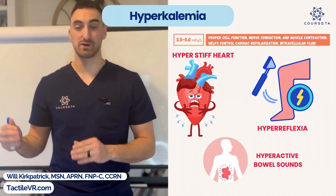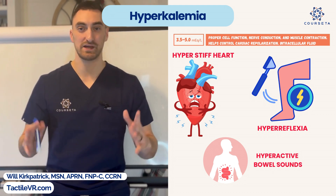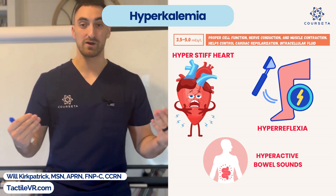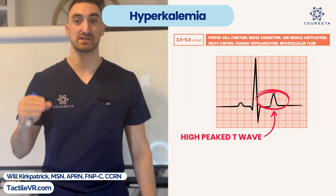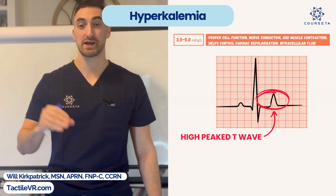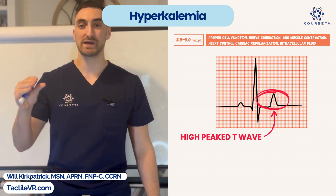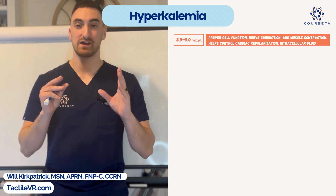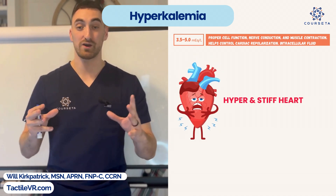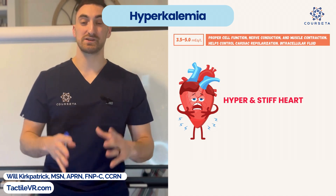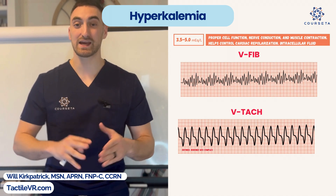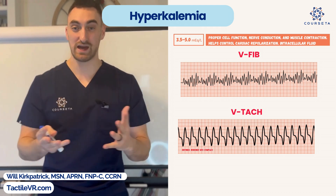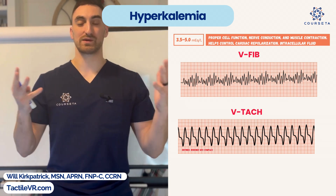Hyperkalemia is anything over 5.0. Potassium tells the truth — high potassium means high muscle contraction and nerve conduction. For the heart, this causes high peaked T waves, a very commonly questioned EKG finding. Hyperkalemia causes serious arrhythmias such as V-fib or V-tach because it widens the QRS complex. There's so much potassium that the heart doesn't have time to relax — it becomes hyper and stiff.